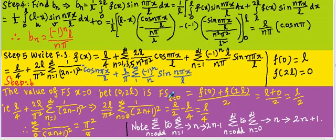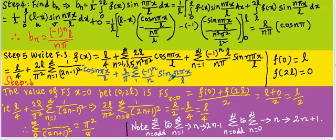Moving L/4 to the right-hand side: L/2 minus L/4 = L/4. Rearranging the equation, we get the final deduction: sigma n = 0 to infinity of 1/(2n+1)² = π²/8.